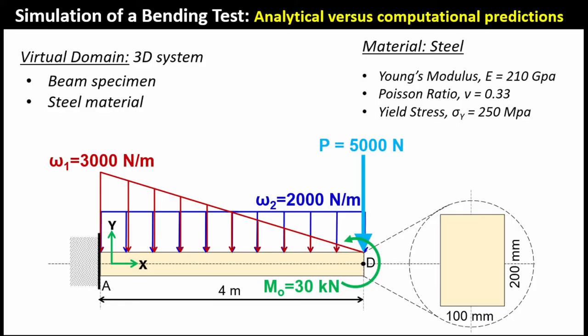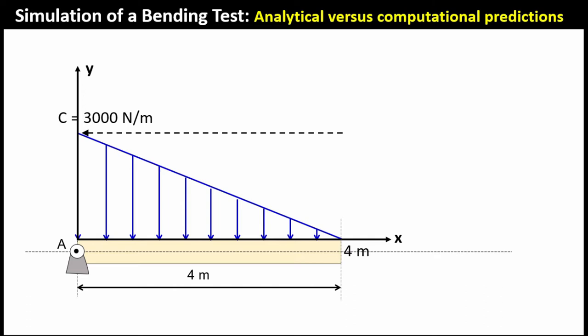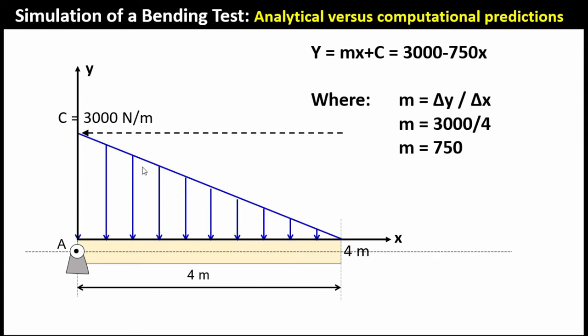The problem we're dealing with is a cantilever beam carrying multiple loading — three types of loading. It's a solid cross-section beam made of steel material. We're going to explore how to represent the triangular load; basically it's a decreasing triangular load, so using the equation of a straight line, the equation becomes 3000 minus 750x, where 750 is the slope of that line.